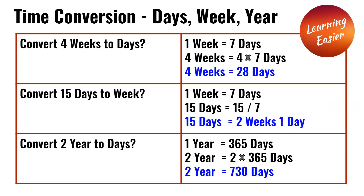Convert four weeks into days. One week has seven days. So four times seven is 28. So four weeks is 28 days.